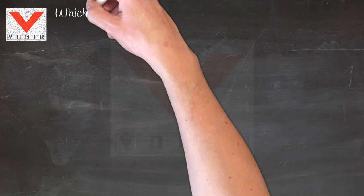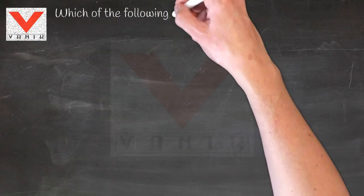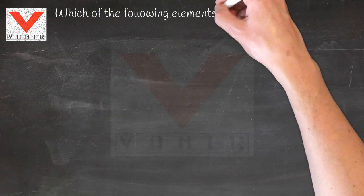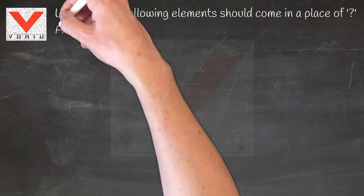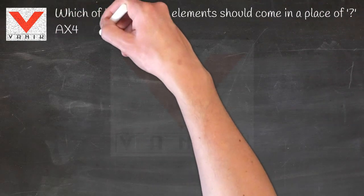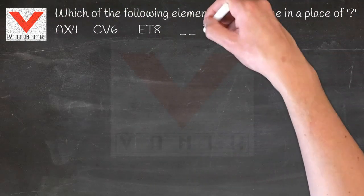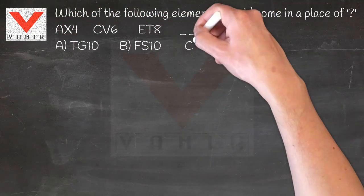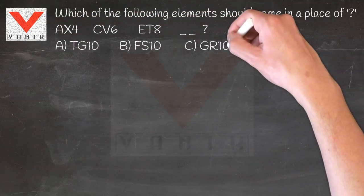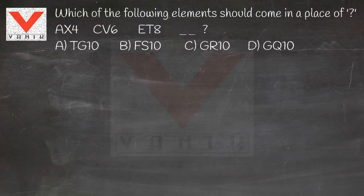Warnock Reasoning Tips. Which of the following elements should come in place of the question mark? The series is: ax4, cv6, et8, dash. Options are: a) tg10.